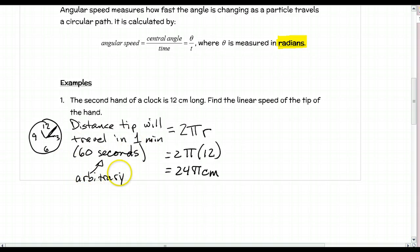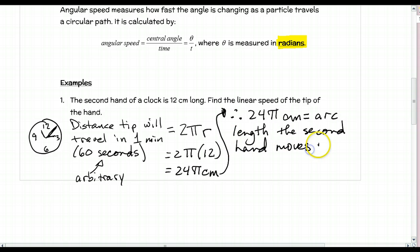Since this 60 seconds is one revolution, we have 24π centimeters as the arc length the second hand moves in 60 seconds. Now that we have arc length, which happens to be the whole circumference, and time, we can find linear speed.